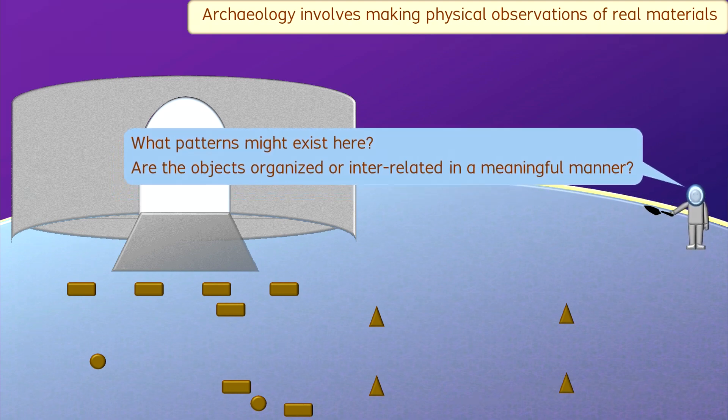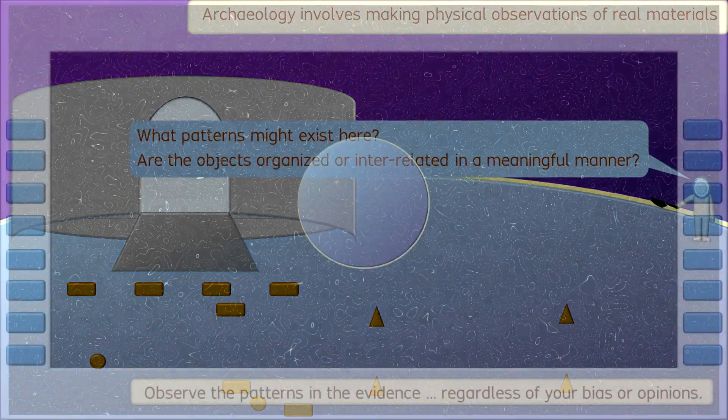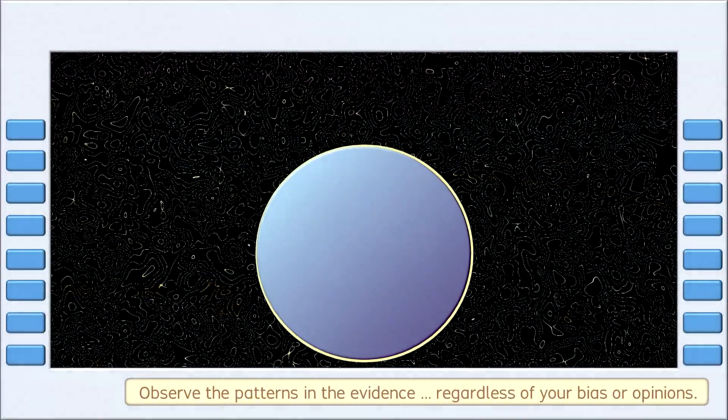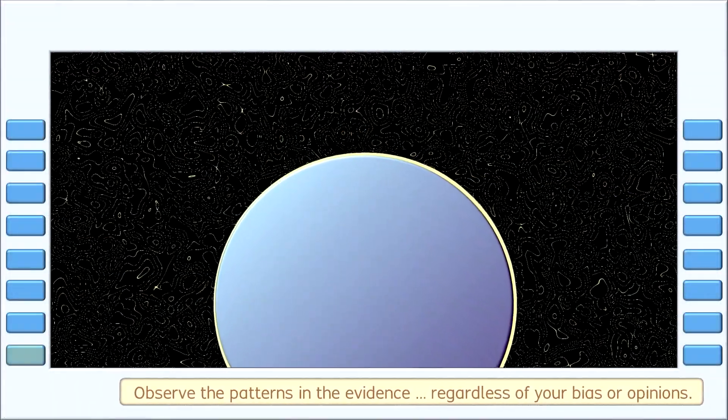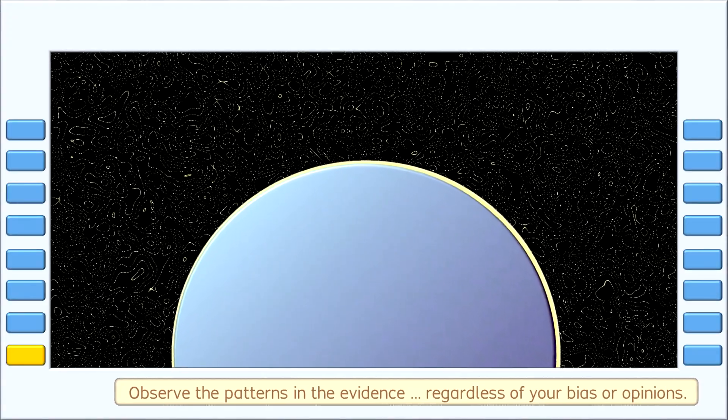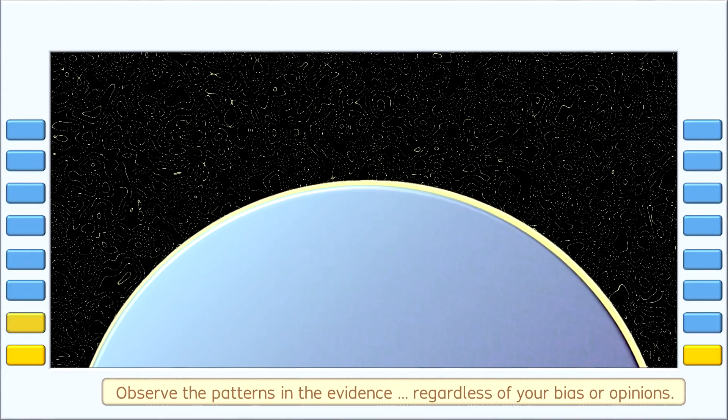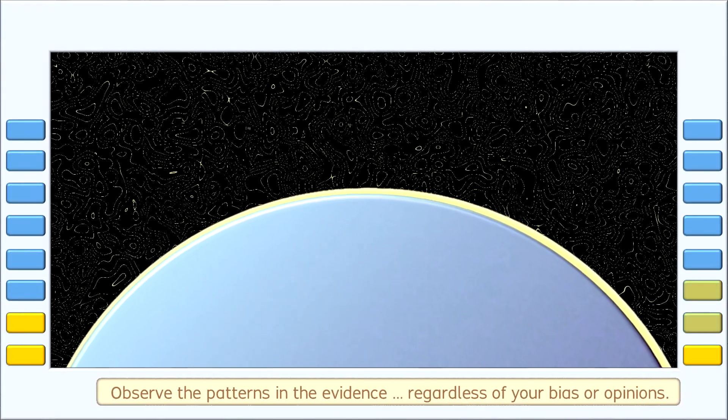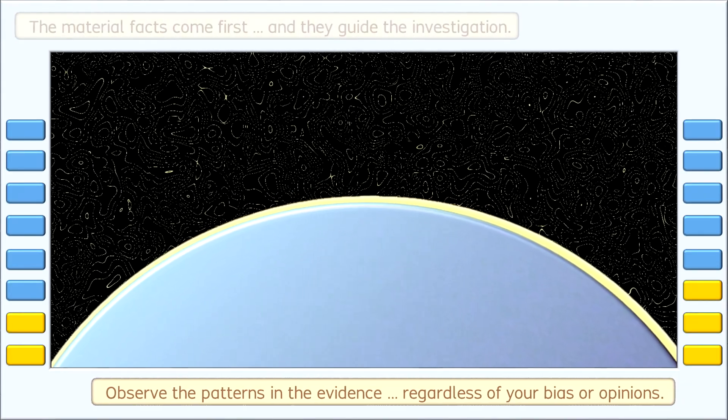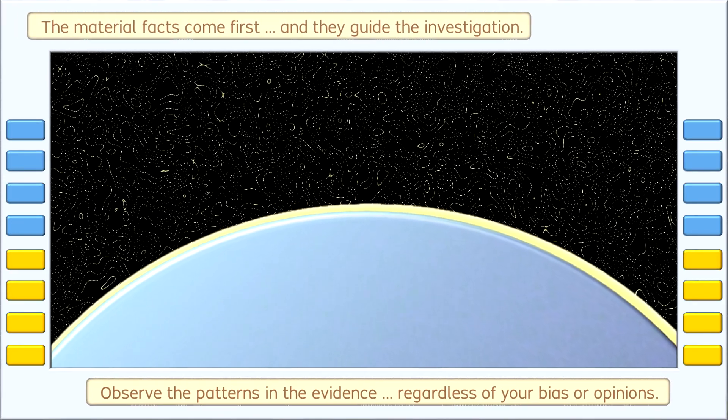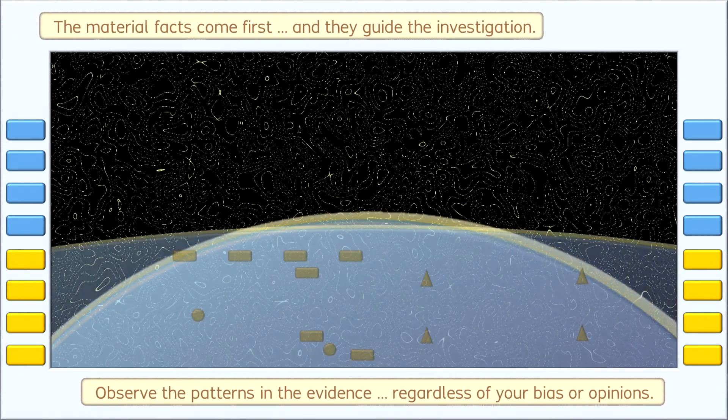In standard practice, an archaeologist can examine the physical evidence objectively, searching for whatever patterns actually exist, rather than imposing bias about how a society or civilization should produce patterns in the evidence. In other words, in archaeology, the material facts come first.